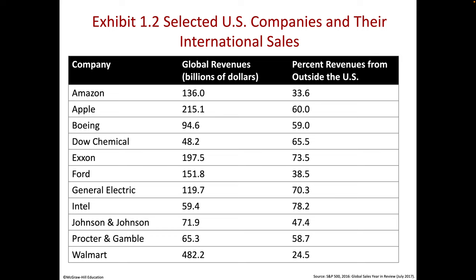Another slide shows companies — you can see Apple, with 60% of their revenues outside the US. Boeing, Airbus constructs some planes in Mobile, Alabama, and that's a European company. You see Walmart — they've got global revenues but most of it's in the US. And if you know anything about Walmart and Latin America, you know they had some issues, which we'll talk about later.